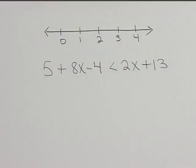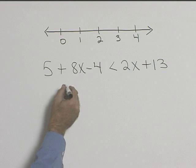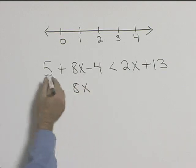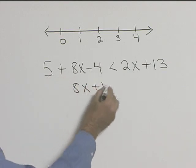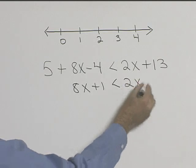Let's solve and graph the inequality 5 plus 8x minus 4 is less than 2x plus 13. First, let's combine like terms on the left side. We'll have 8x, and 5 minus 4 will be plus 1, so we get 8x plus 1 is less than 2x plus 13.